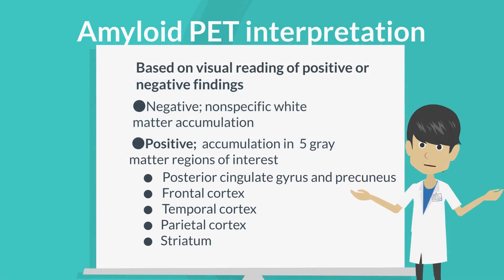Amyloid PET interpretation is based on visual reading of positive or negative findings. Nonspecific white matter accumulation is regarded as a negative finding. Gray matter accumulation in five regions of interest — posterior cingulate gyrus and precuneus, frontal cortex, temporal cortex, parietal cortex, and striatum — is regarded as a positive finding.